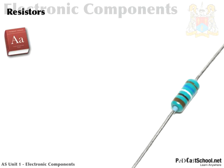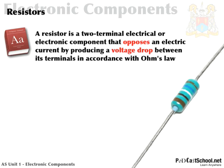Let's have a look at what we actually mean by resistors. You've come across resistors before at GCSE or perhaps in science, but we really must make sure we know exactly what's going on and everything about them, especially because our project work will be so dependent upon it. A resistor is a two-terminal electrical or electronic component that opposes an electric current by producing a voltage drop between its terminals in accordance with Ohm's law.